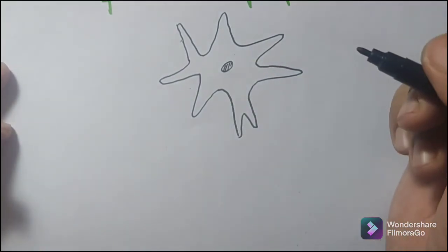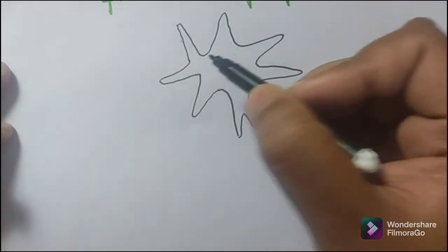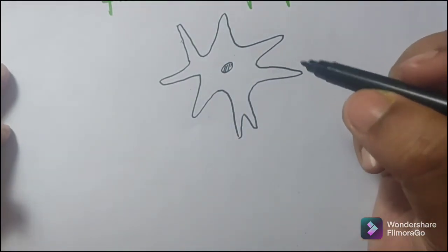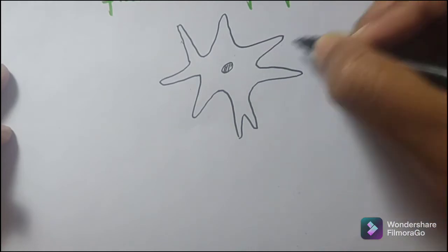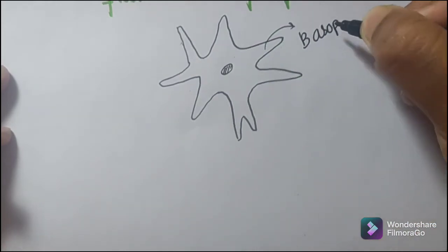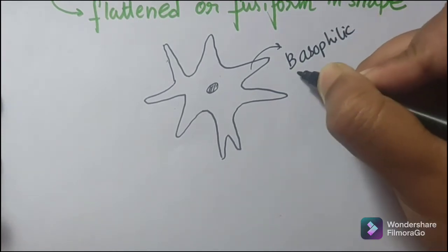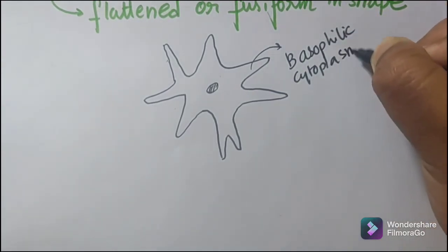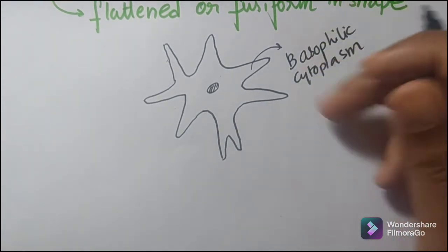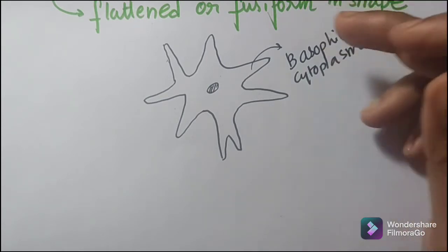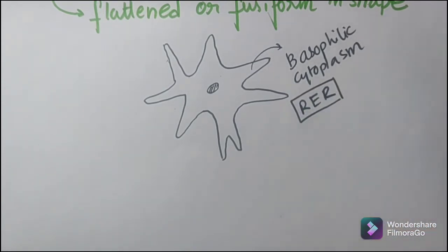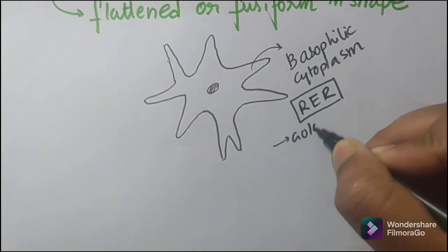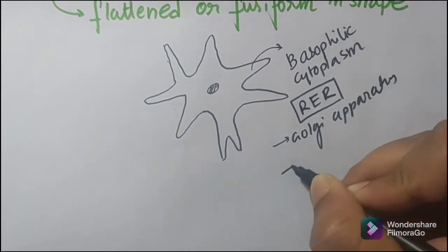So this is a rough schematic diagram of the fibroblast. Here is a centrally placed nucleus, and it presents numerous processes — these are the numerous cytoplasm processes. Young and active fibroblasts possess open-faced nuclei and abundant basophilic cytoplasm, along with rough endoplasmic reticulum, numerous Golgi apparatus, and mitochondria.